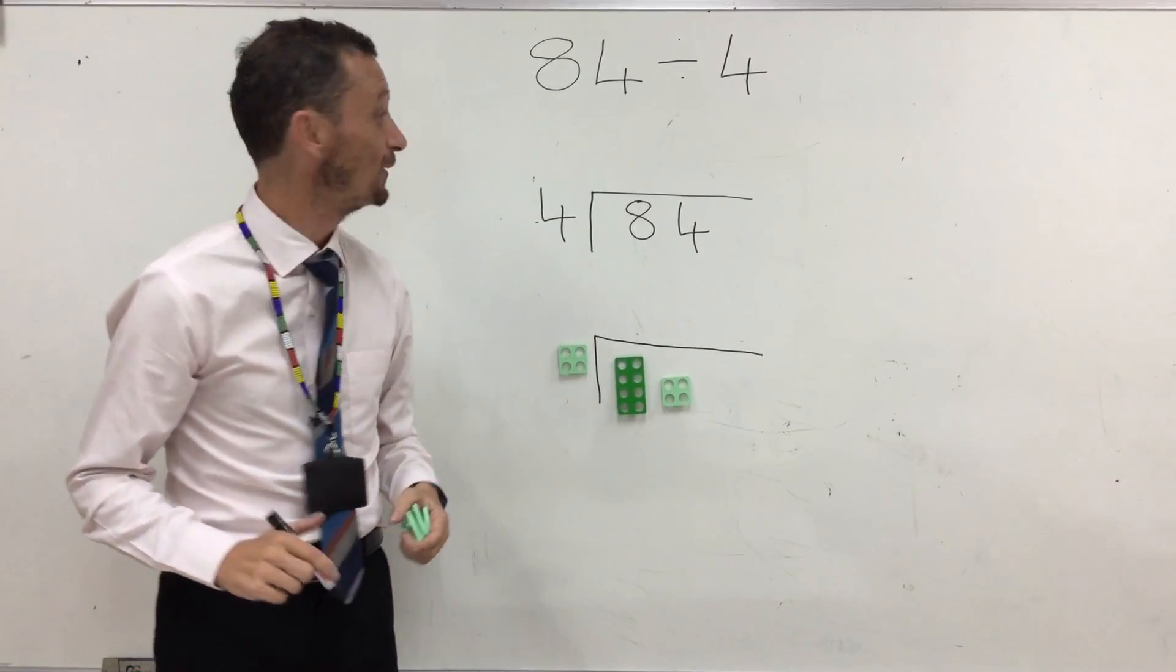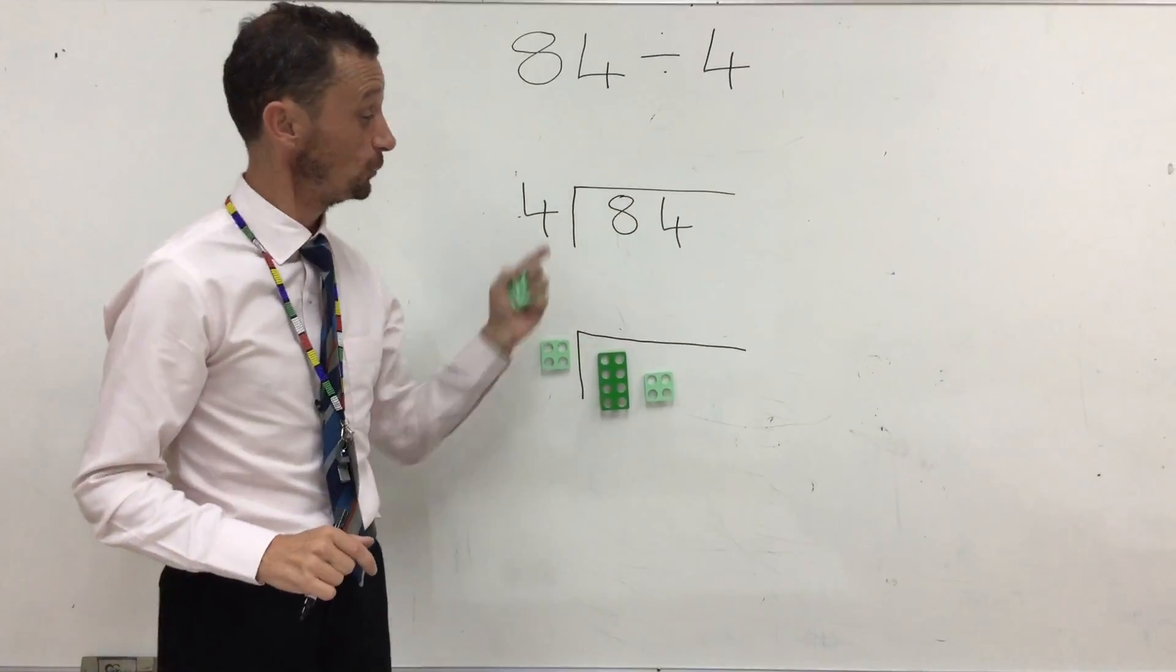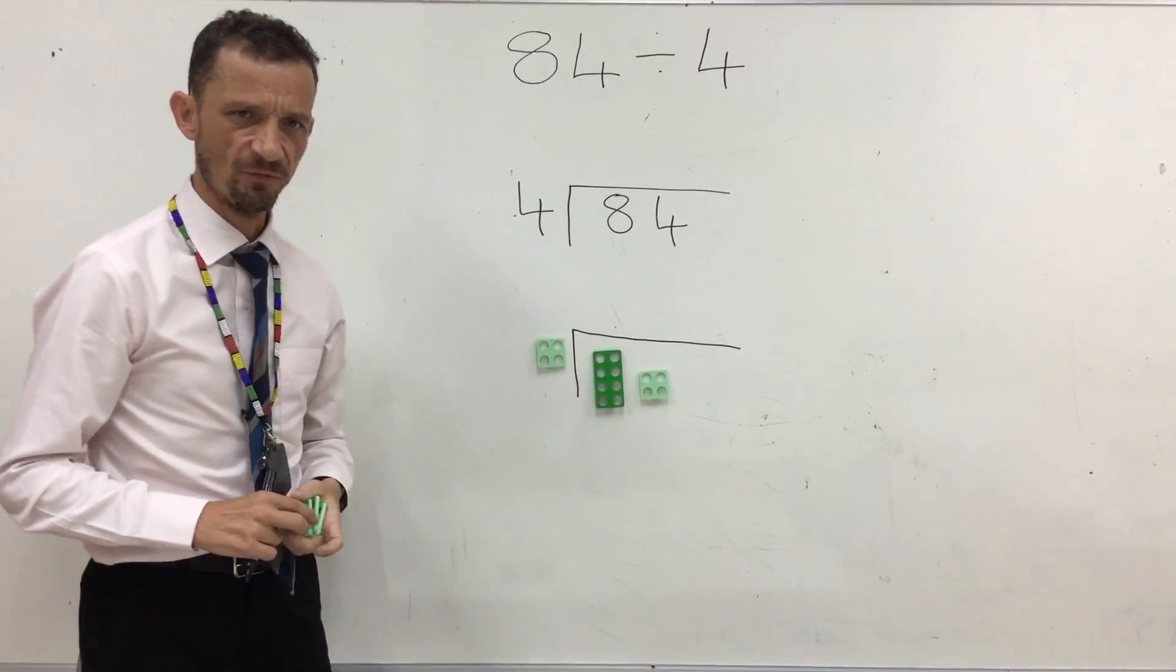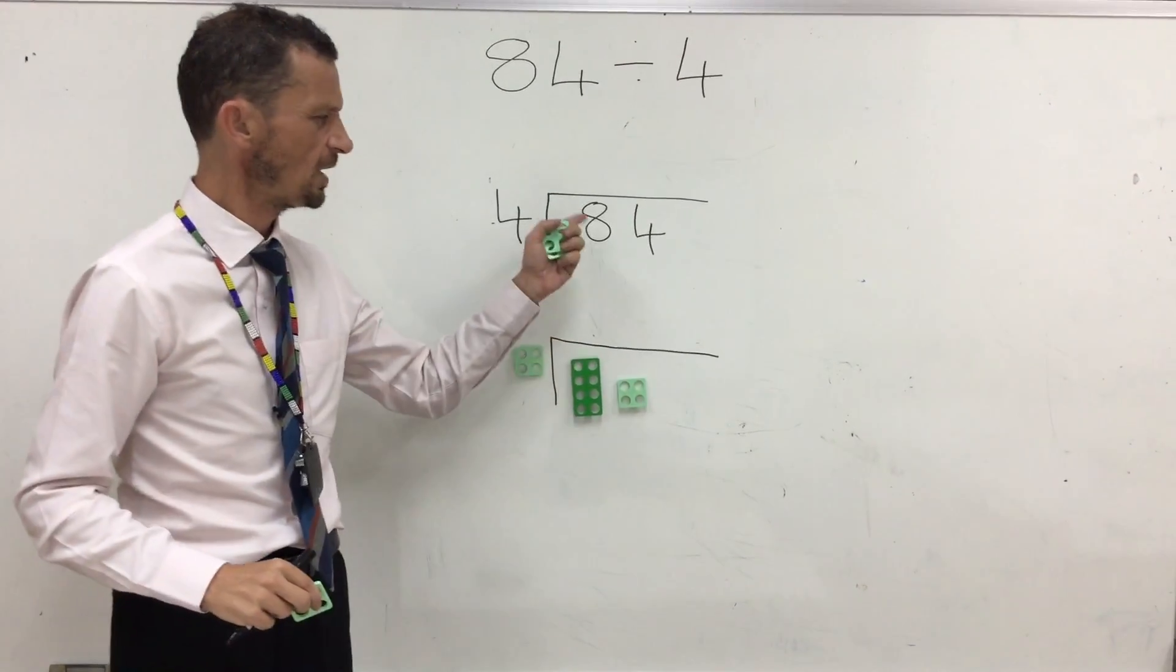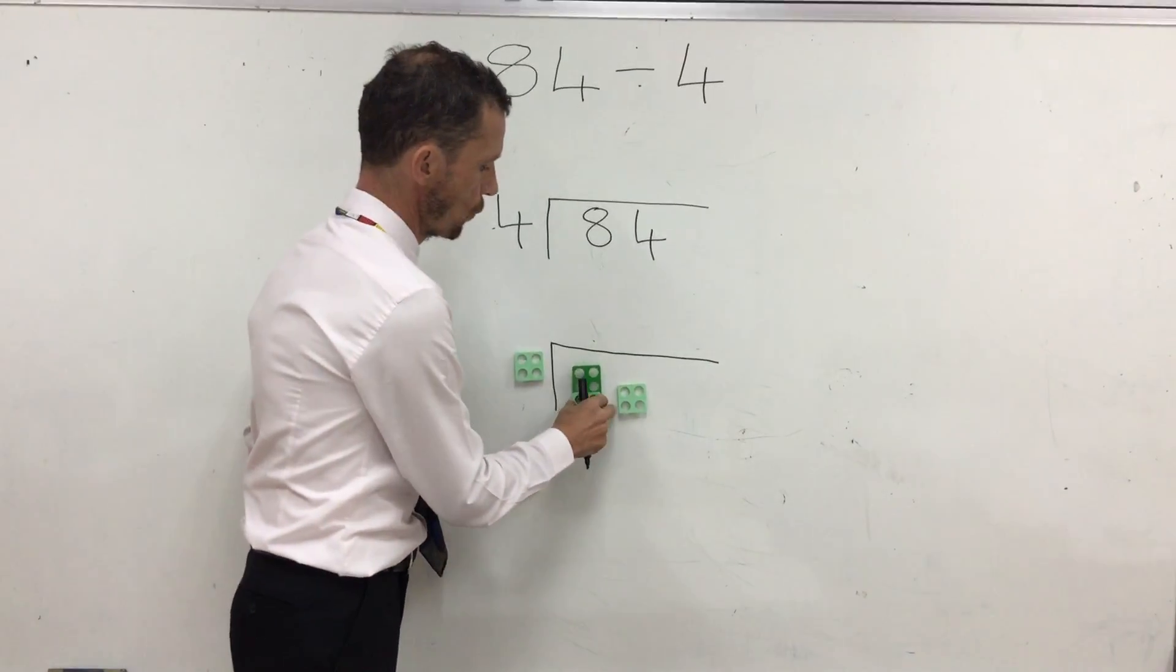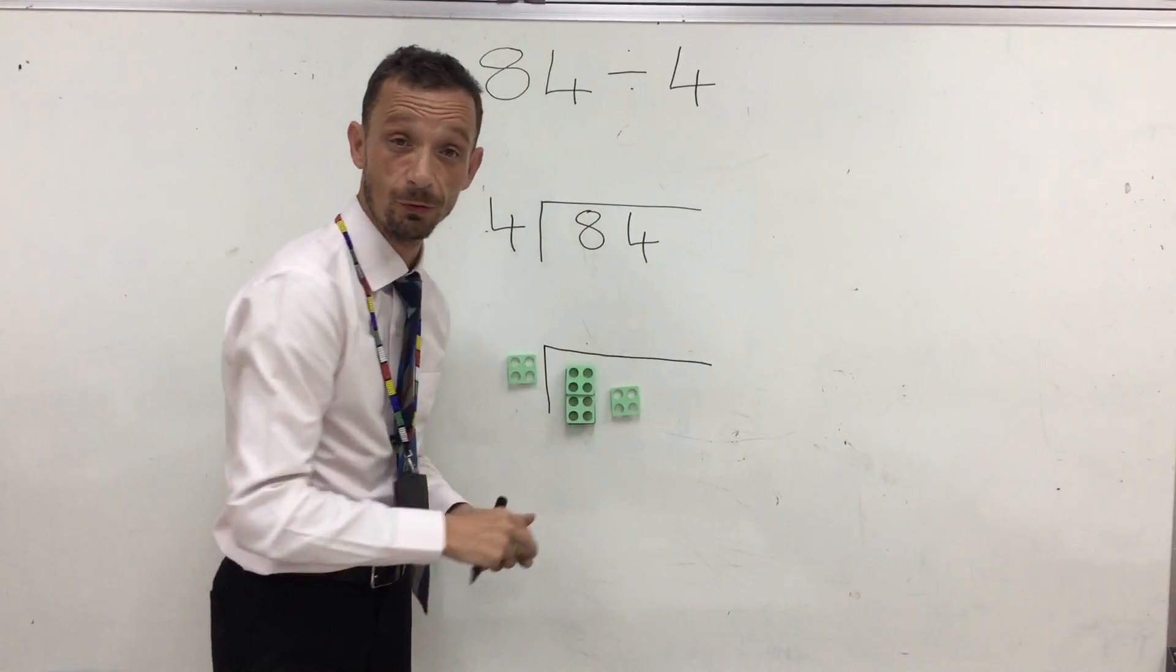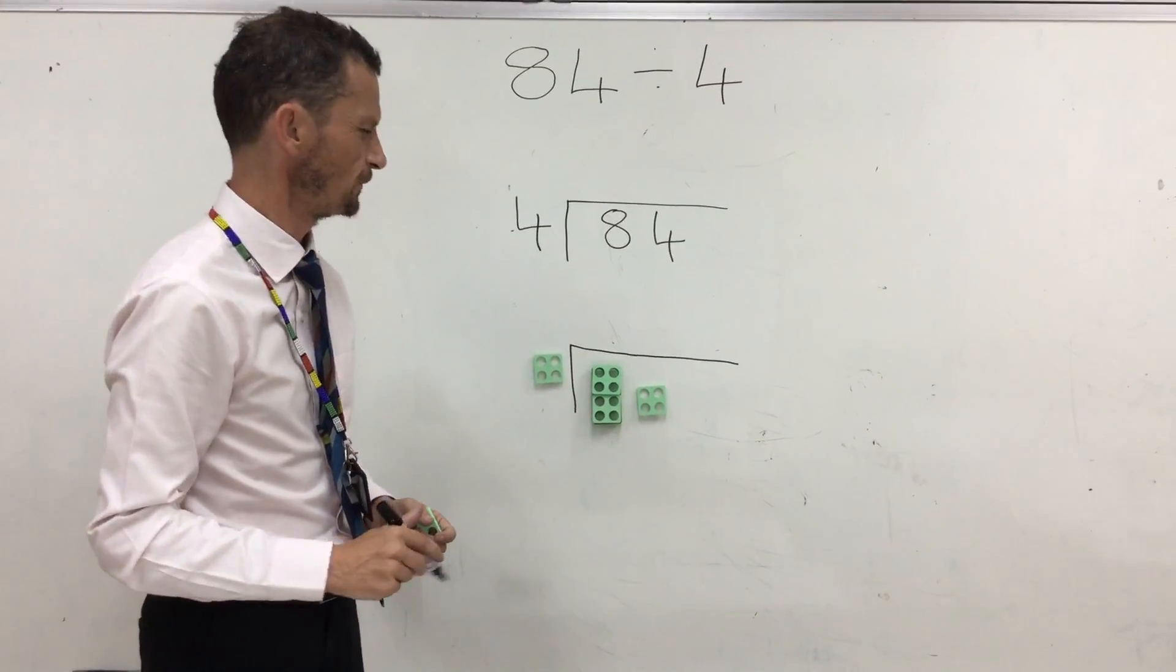The next calculation we're going to do is 84 divided by 4. So now you've drawn your bus stop, you've got the biggest number hiding in the bus stop, and you've got the 4 just before the bus stop. Let's see how many 4s go into the first number, the number 8. What number do you think I put there? 2.